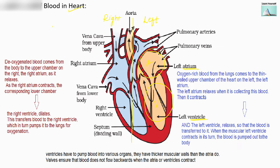Similarly on the right side, this is the right atrium and the lower portion will be the right ventricle. So there will be four chambers of the heart — two atriums and two ventricles: left atrium, left ventricle, right atrium, and right ventricle.